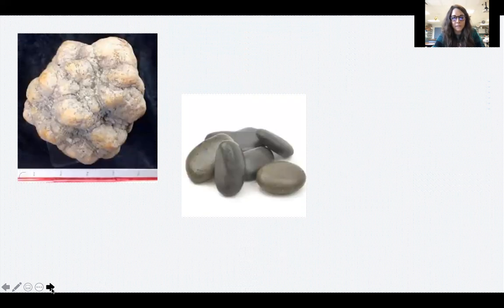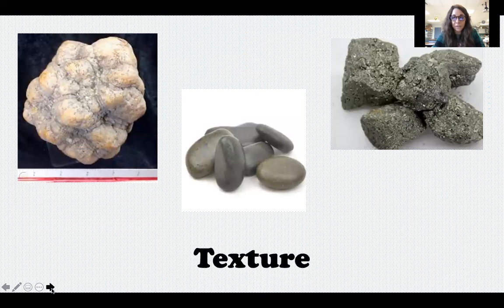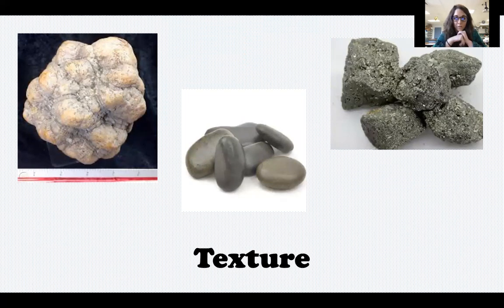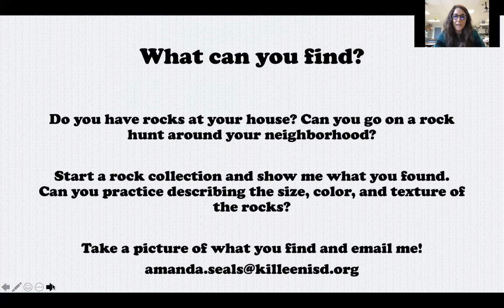Another way that rocks can be different is texture. Remember, texture is how something feels. Rocks can be bumpy like this one, smooth like these here, or very rough. Most rocks are hard, but there are even some rocks that are softer — so soft that they can be chipped away at just by using your fingernail.